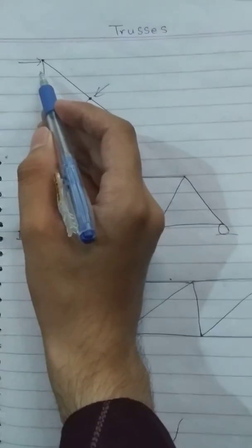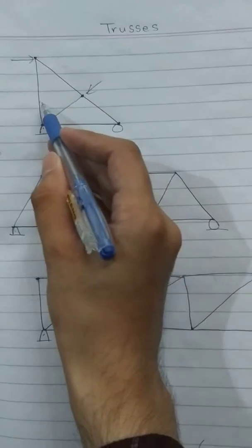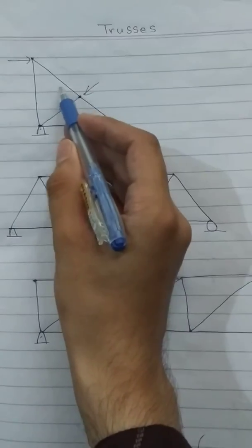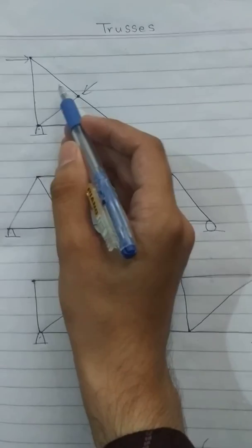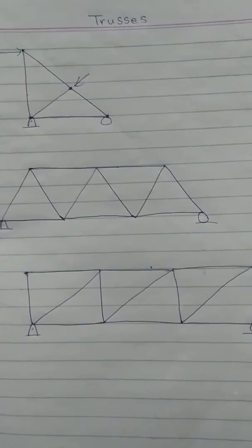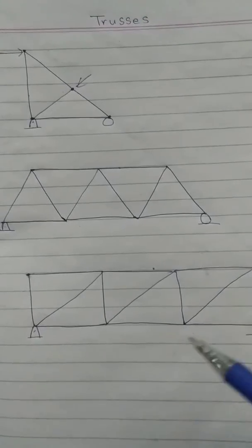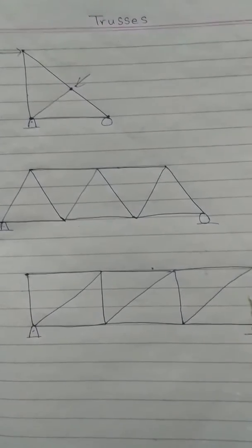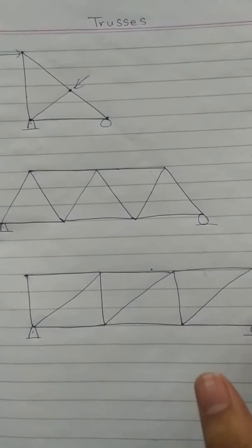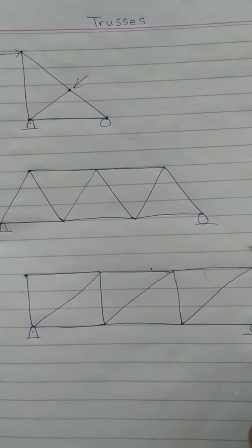You can see that external loading is applied at the joints. These are the members of the truss, and the force developed inside these members is either compression or tension. These are basically two-force members, so each member can act as an axial force member. Therefore, the force acting at the ends must be directed along the axis of the member. If the force tends to elongate the member it will be tensile, or if it tries to compress then it will be compression.